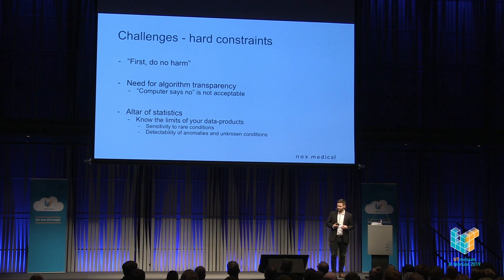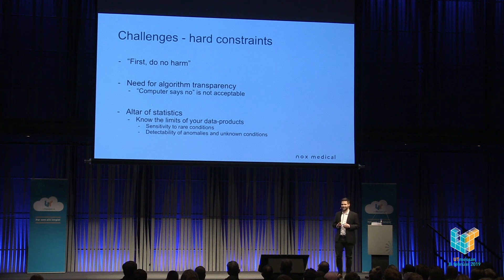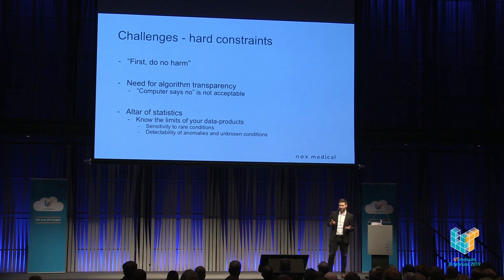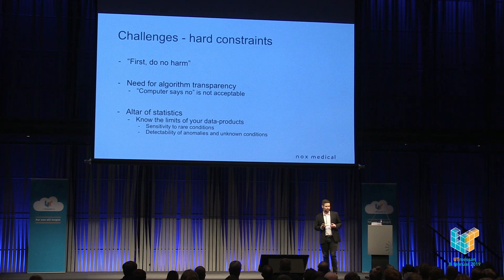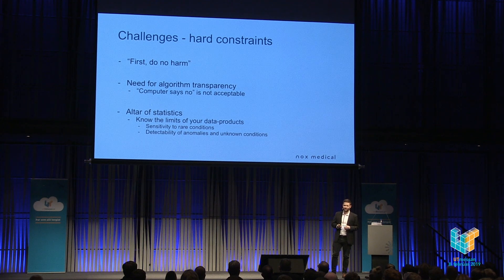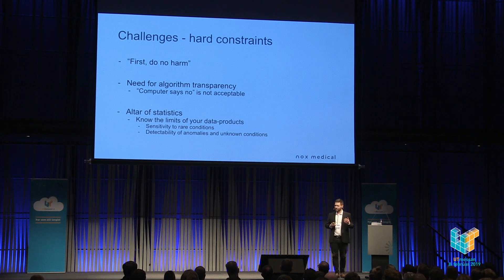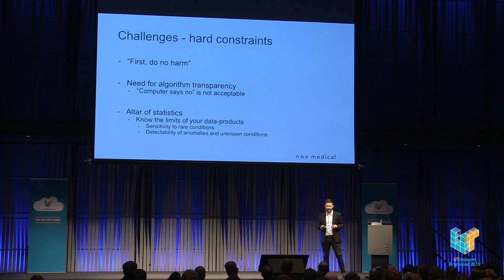Furthermore, we sometimes talk about sacrificing the individual on the altar of statistics. This means that when you train an algorithm to do some task, you have to optimize for the individual, not the mean. The algorithm can have very good mean performance but forget about the rare conditions and unknown conditions that haven't previously been accounted for.